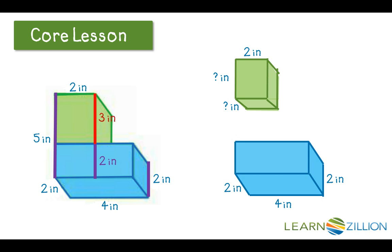So I know that the red segment is 3 inches. And I'm going to label that on both sides and also over on my prism to the right.